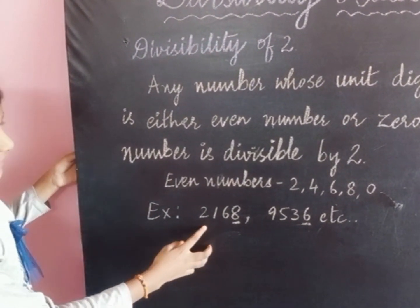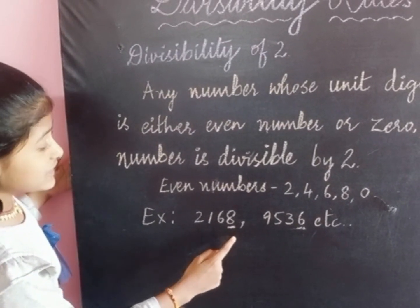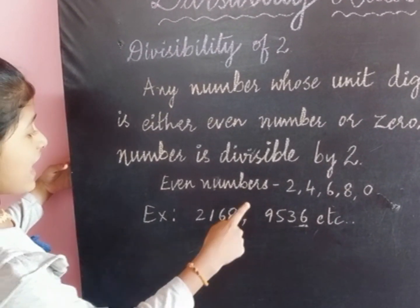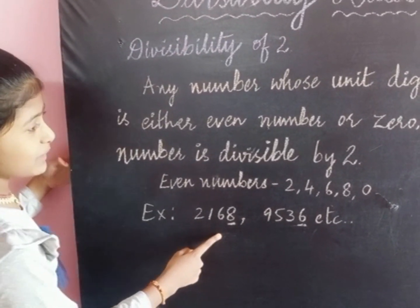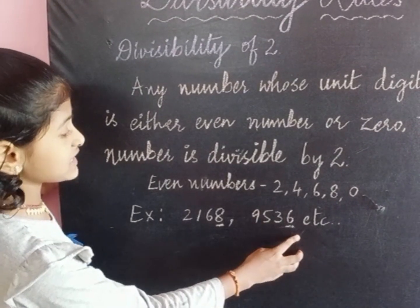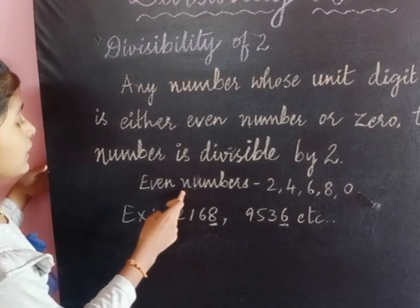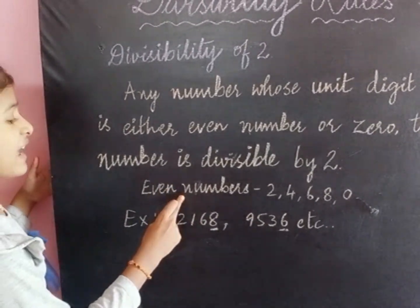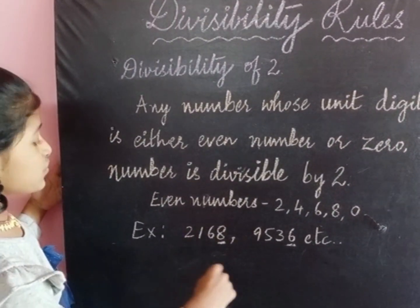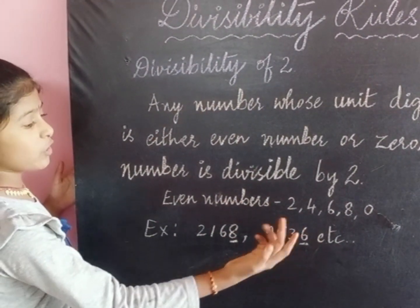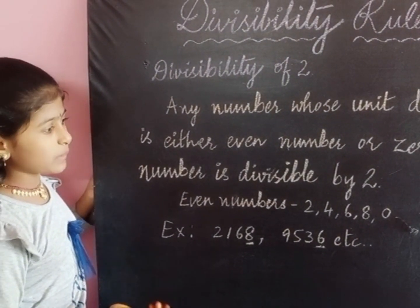For example, 2168 — the unit digit of this number is 8, which is an even number, so this whole number is divisible by 2. And 9536 is also having 6 in its unit place, which is an even number, so the whole number is also divisible by 2.